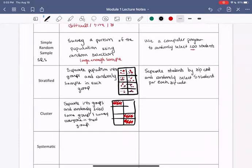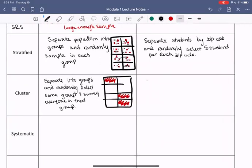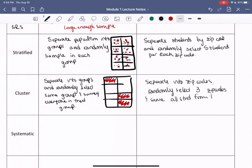So again, that would be stratified in a cluster sample. You could also separate students by zip code and then randomly select three zip codes to survey all students. So again, separate into zip codes. Then randomly select, say, three zip codes and survey all students from those zip codes.